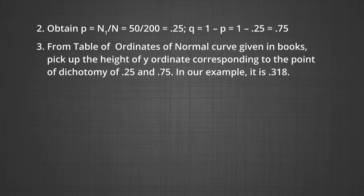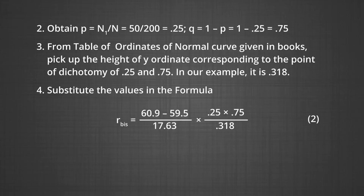We obtain p = N1/N = 50/200 = 0.25, and q = 1 - p = 0.75. From the table of ordinates of normal curve, pick up the height of y ordinate corresponding to the point of dichotomy of 0.25 and 0.75. In our example, it is 0.318.